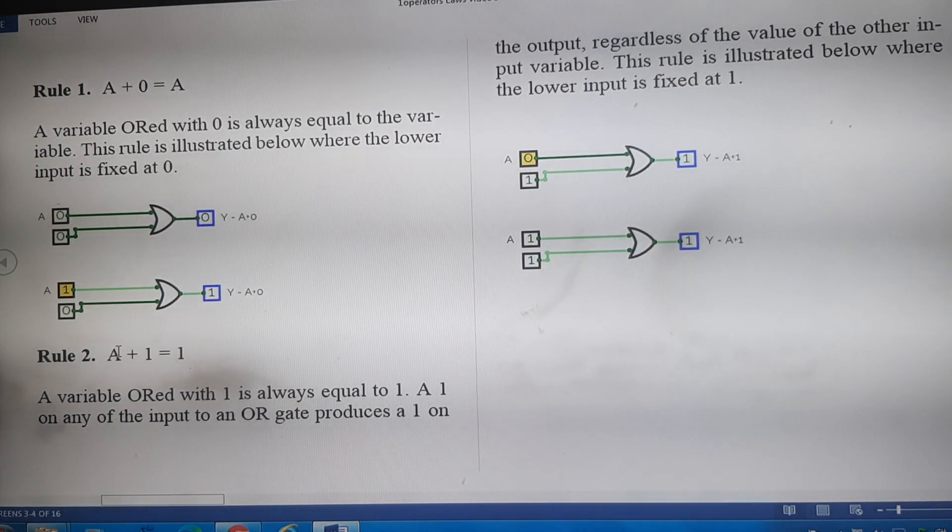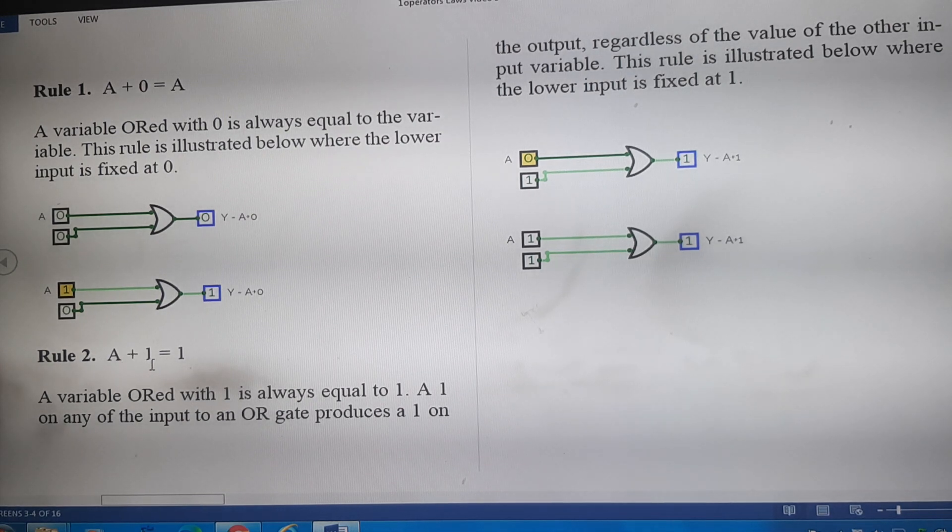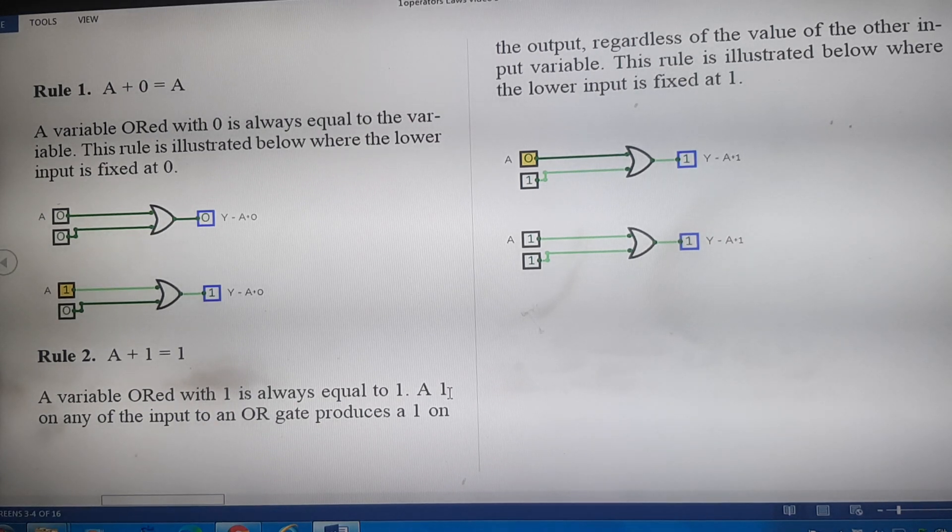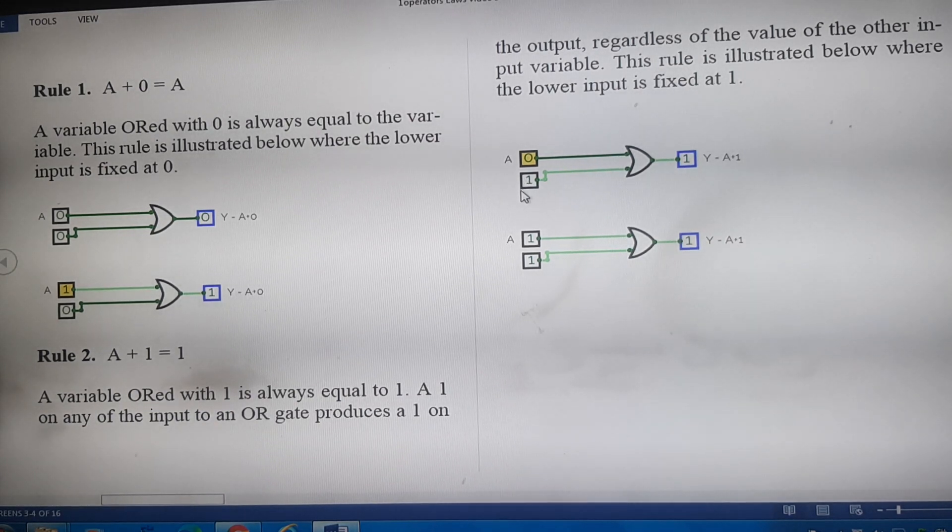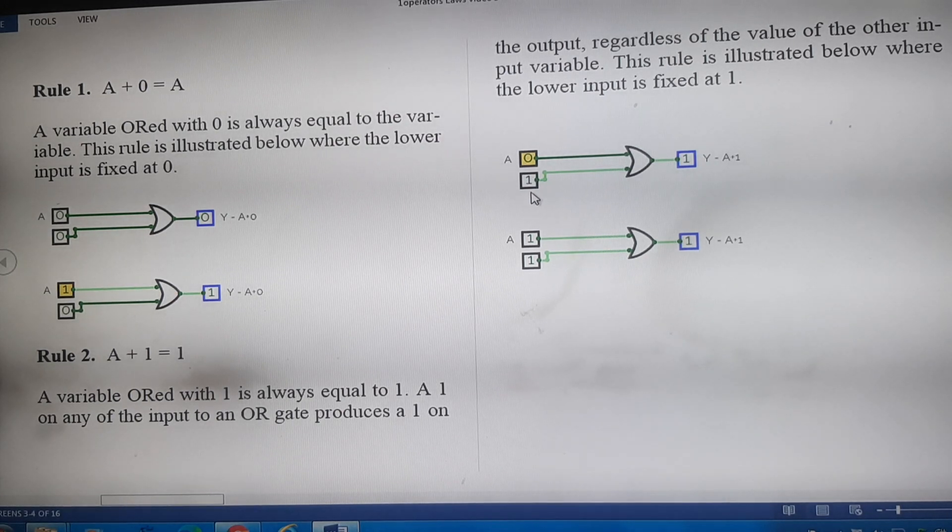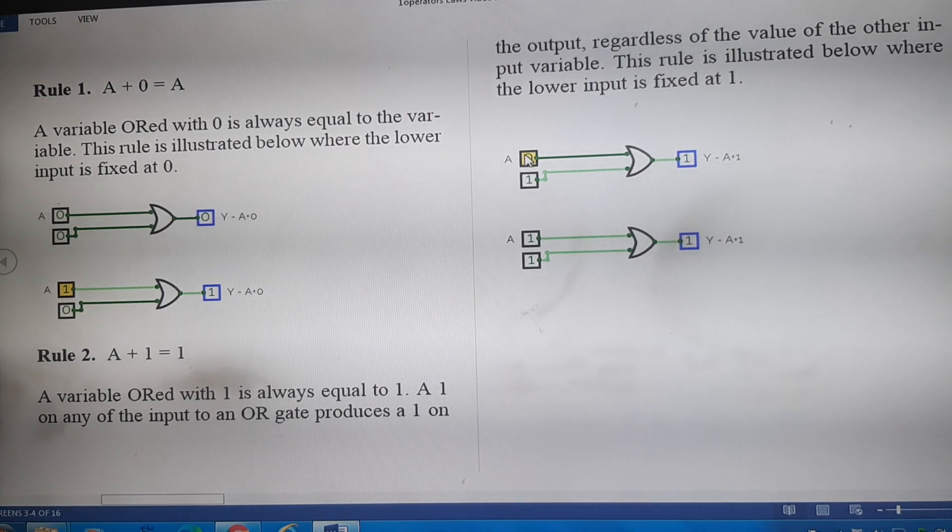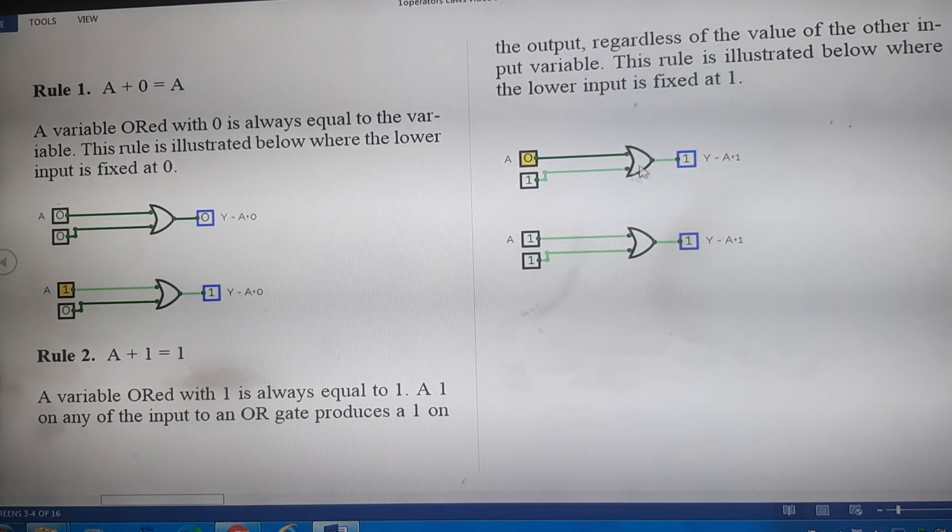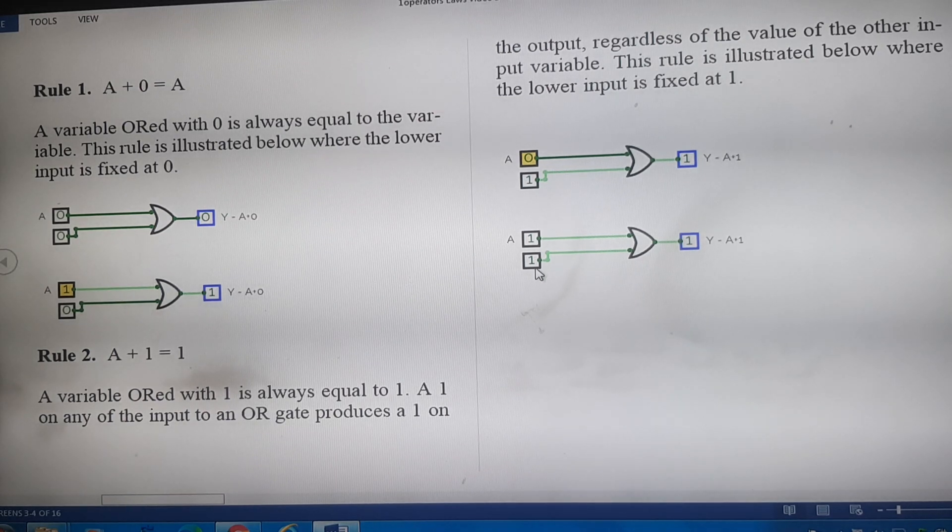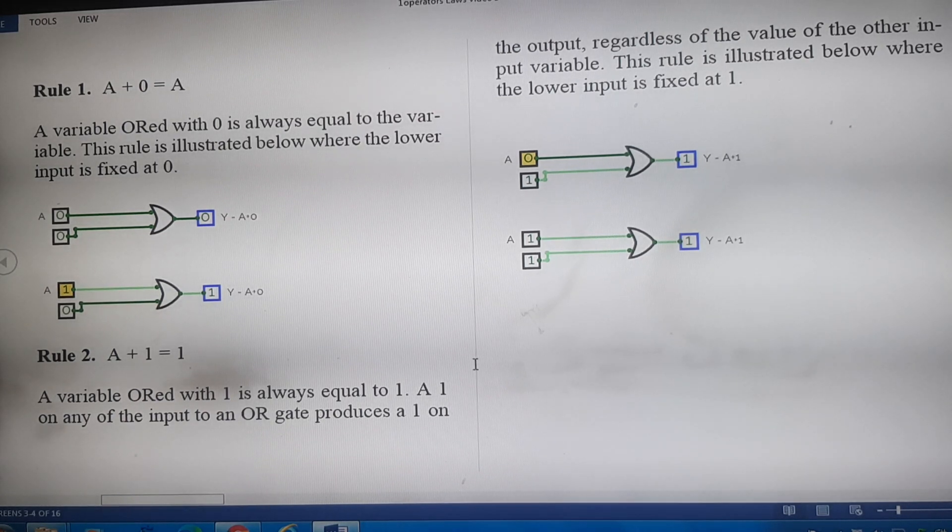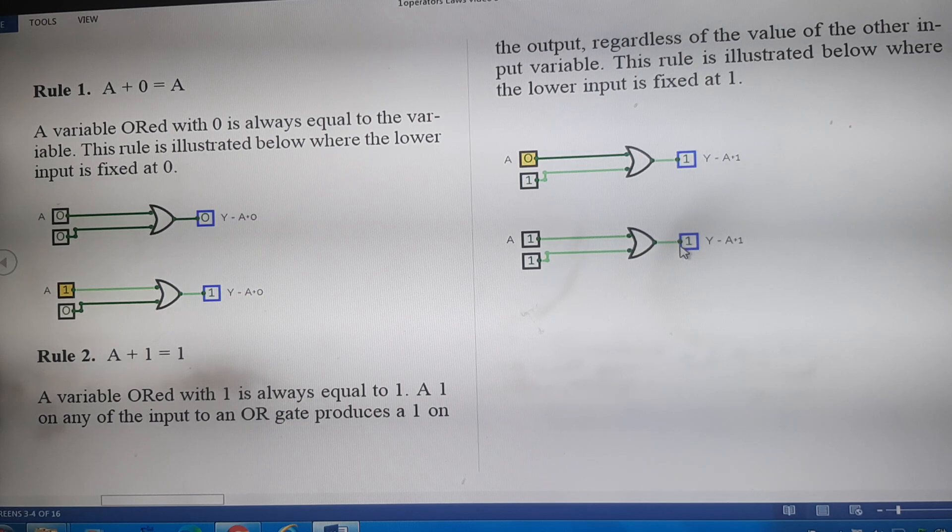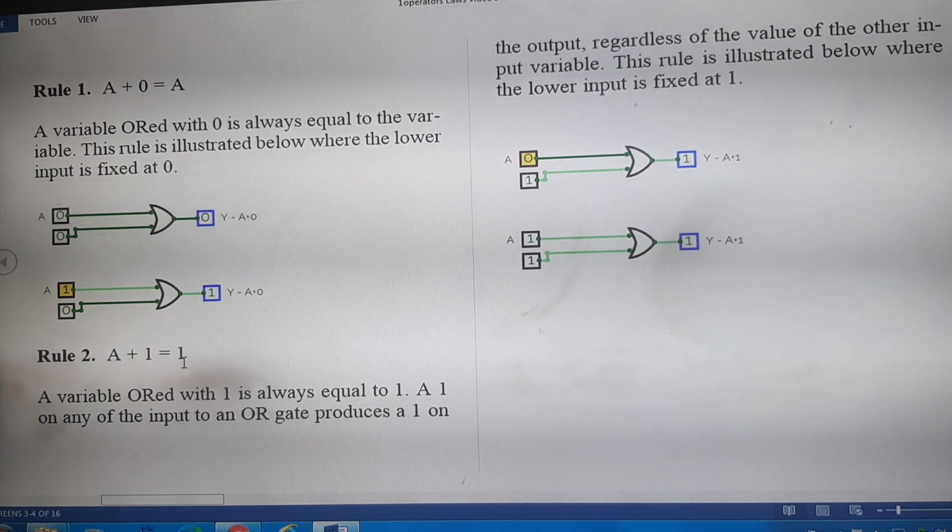Rule number 2: any variable when it is ORed with 1 is always equal to 1, which means if there is 1 on any of the input of OR gate, it doesn't matter what is the value of the other input. It can be 0, it may be 1, but the output 0 + 1 is 1, 1 + 1 is 1. When any of the input on an OR gate is 1, the output is equal to 1. So we can say that A + 1 = 1.